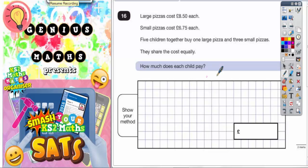Question 16. Really important to read this question carefully. We've got large pizzas at £8.50 each and small pizzas at £6.75 each. Five children together buy one large pizza and three small pizzas. They share the cost equally. How much does each child pay?